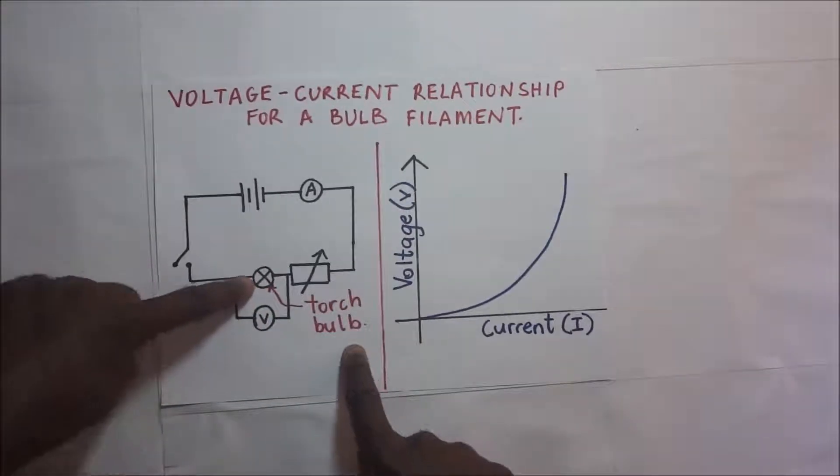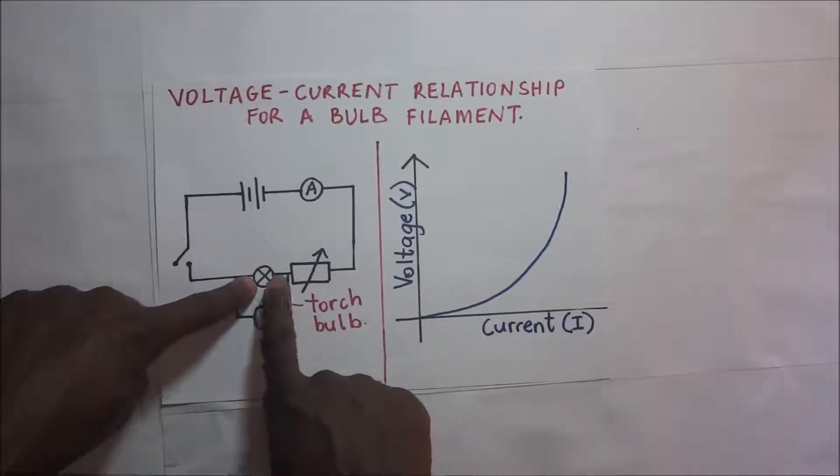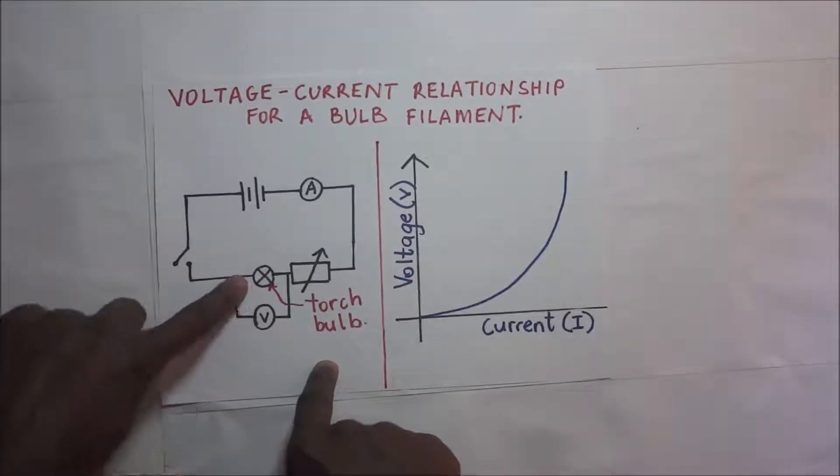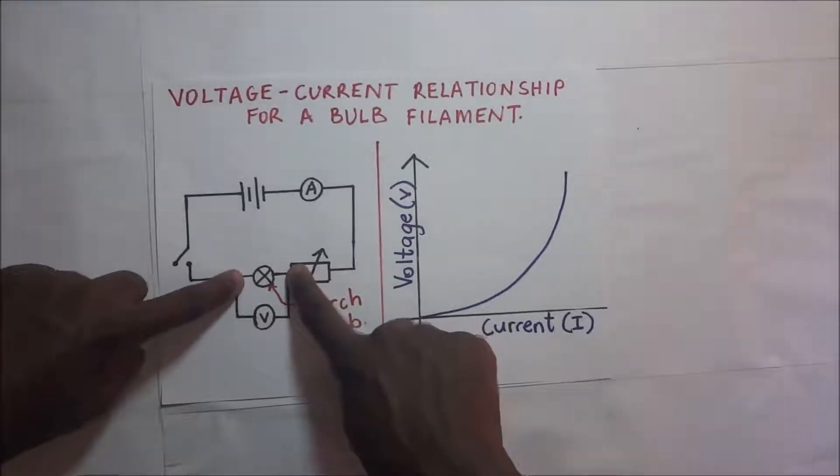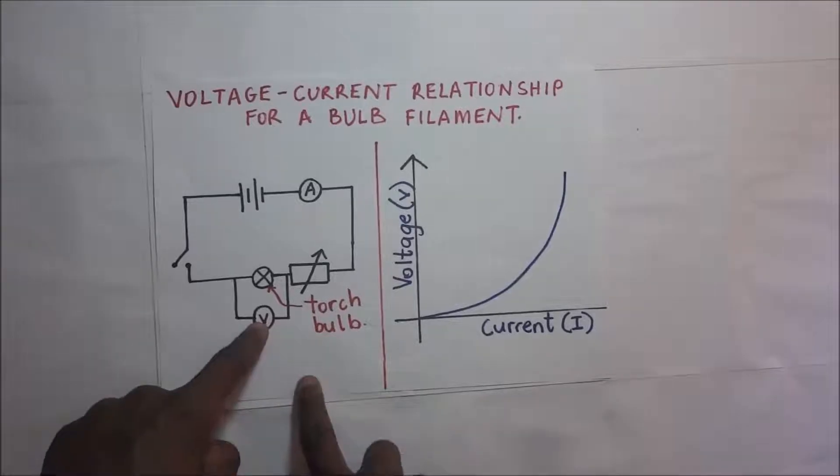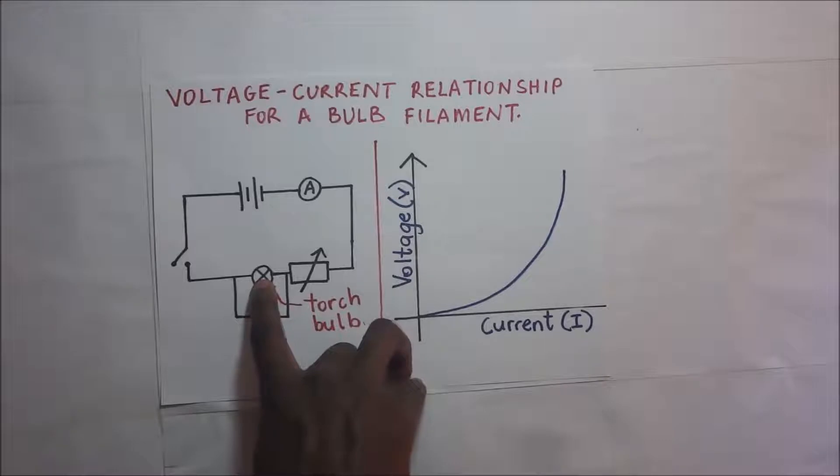This right here is our torch bulb, and in our torch bulb is where we're having our filament. Now, across the terminals or ends of this filament, we are having the voltmeter. This voltmeter is going to be giving us the potential difference across the filament.